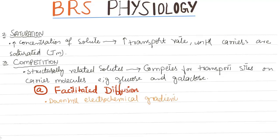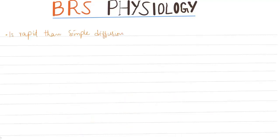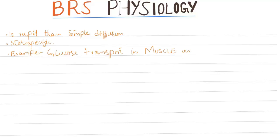Facilitated diffusion is downhill along the electrochemical gradient, carrier-mediated, and no metabolic energy is required; there is no sodium gradient. It is more rapid than simple diffusion and is stereospecific. An example is glucose transport in muscle and adipose cells, which occurs by facilitated diffusion.